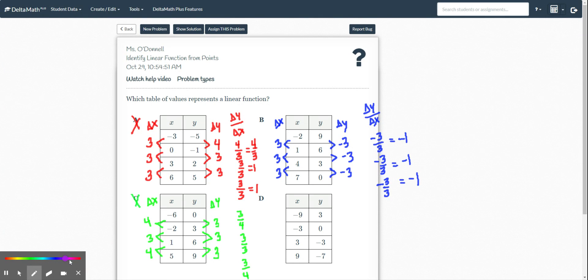All right, let's do D. So I'm going to do my carets to do first differences. Do my carets to do first differences. 9 minus 3 is 6. 3 minus negative 3 is 6. Negative 3 minus 9 is 6. Negative 7 minus negative 3 is negative 4. Negative 3 minus 0 is negative 3. 0 minus 3 is negative 3.